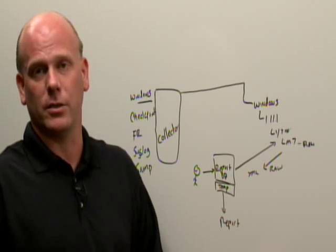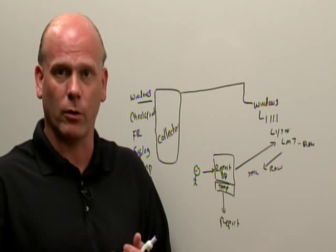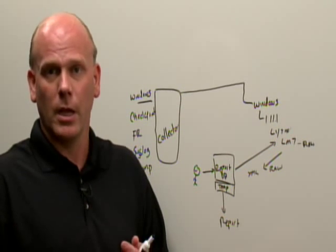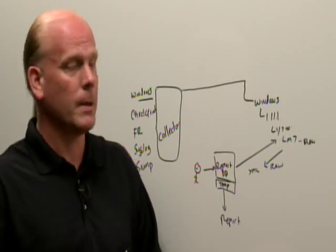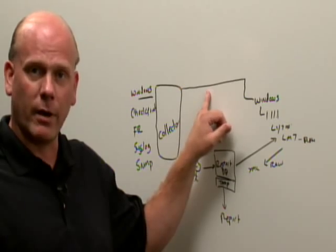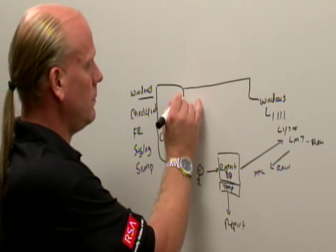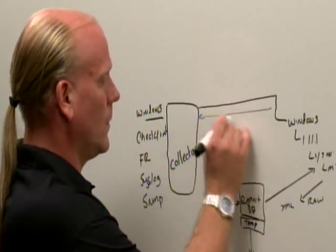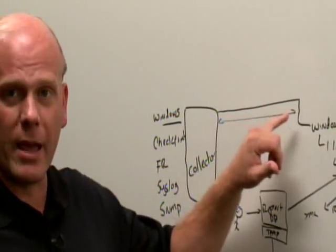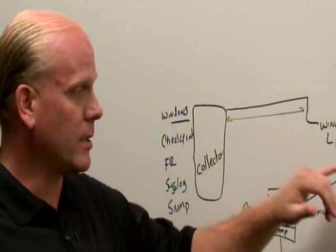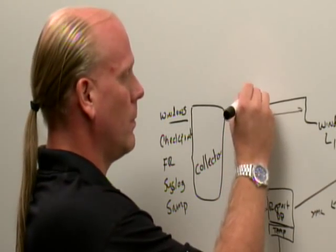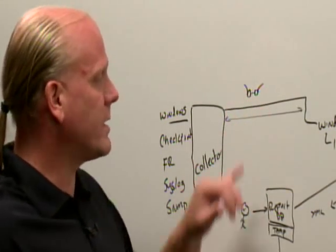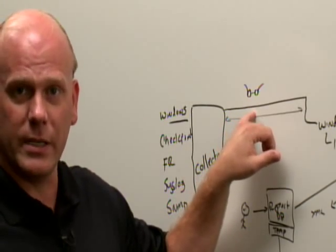The next thing I'd like to do is to be able to run alerts or correlations. Now the way that we do this differentiates ourselves from the rest of the marketplace as well. If we look at this line right here, so this is the path by which the data, once it's been collected, gets stored. Now think, if you will, of a little process that has view into this live data stream.